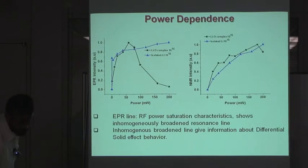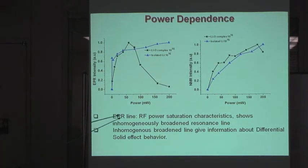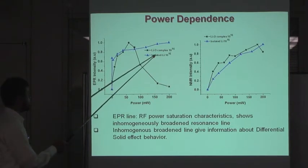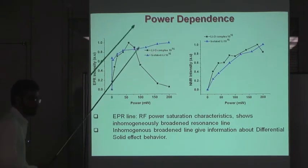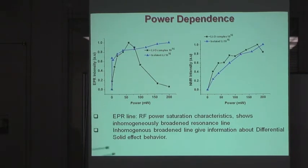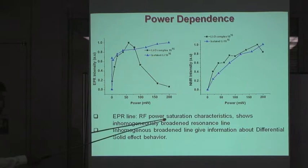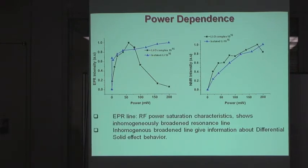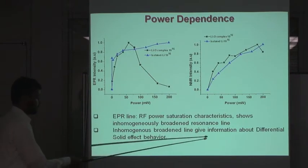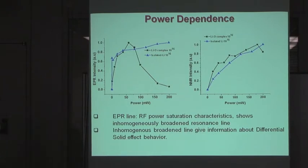To conclude: in contrast to phosphorus, the lithium-oxygen complex under illumination and isolated lithium show EPR absorption line intensity that increases with decreasing temperature, which indicates a short electron spin lattice relaxation time. The degree of polarization correlates with the temperature dependence of EPR line intensity for both the lithium-oxygen complex and isolated lithium.